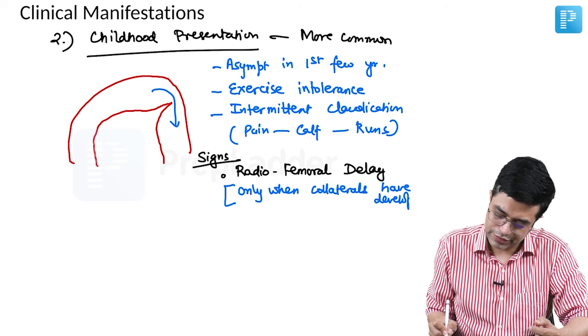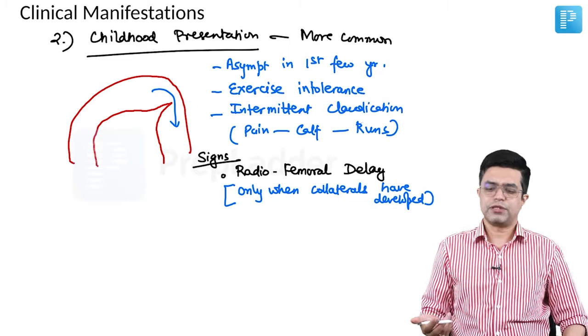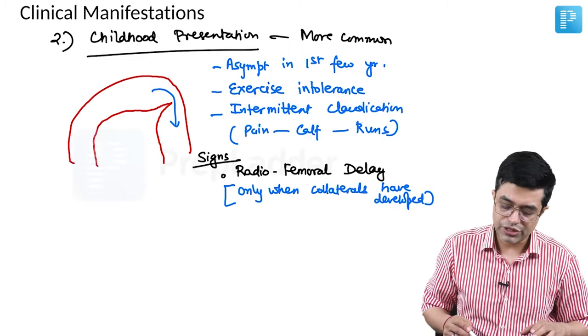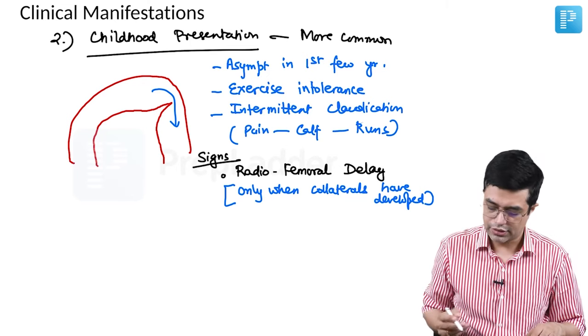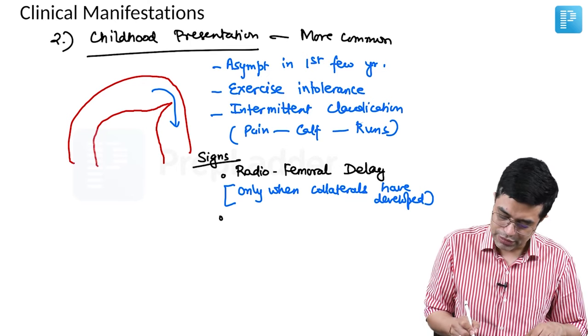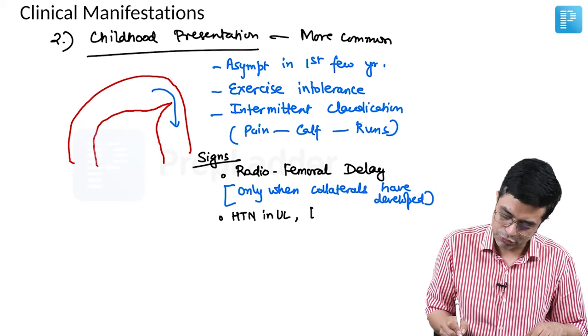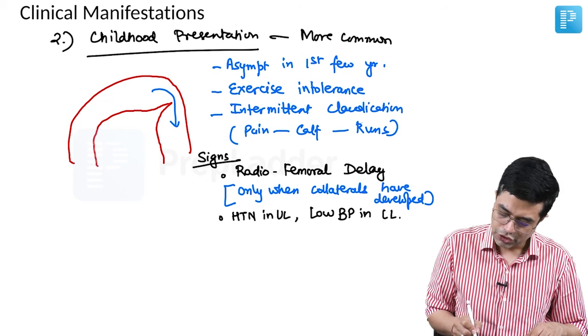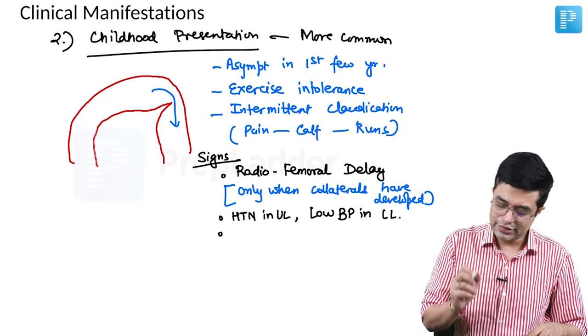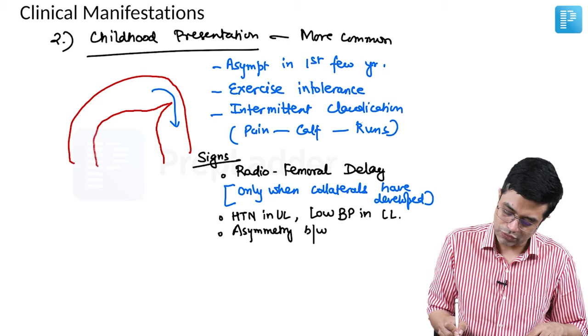Collaterals will develop in these patients because certain arteries have more blood supply, certain arteries have less. Those arising proximal to the narrowing have more blood. Those arising distal to it will have less blood. Then you will have hypertension occurring in the upper limbs and hypotension, that is low BP, in the lower limbs. Chronically, these children will develop asymmetry between upper limbs and lower limbs.